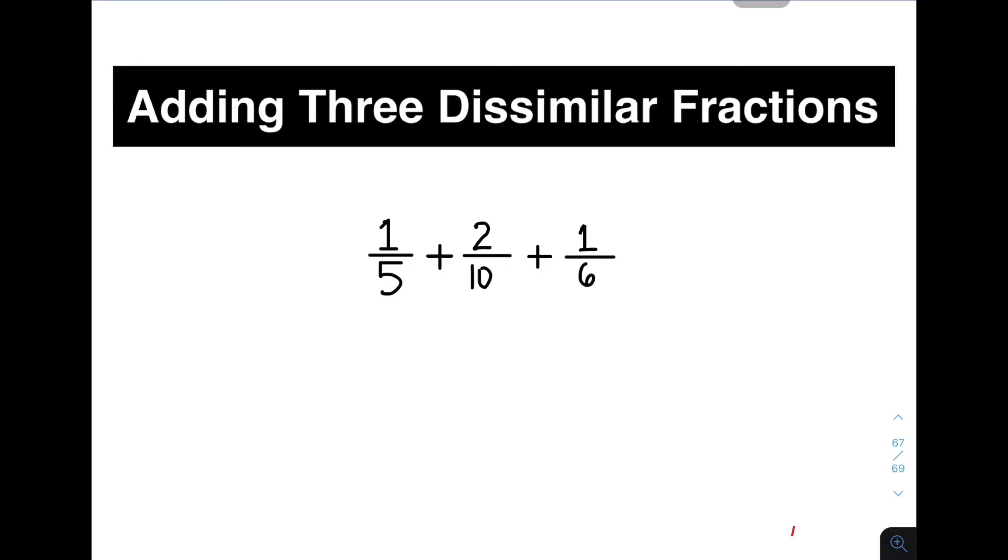When you say dissimilar fraction, these are fractions with different denominators. We have here the given fractions 1 over 5, 2 over 10, and 1 over 6. As you can see, the denominators are 5, 10, and 6, and they are different. That's why these fractions are dissimilar fractions.